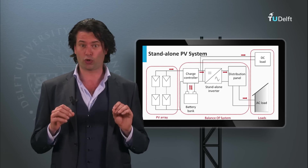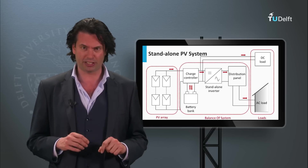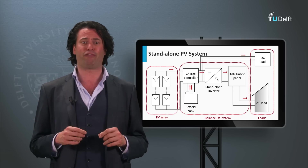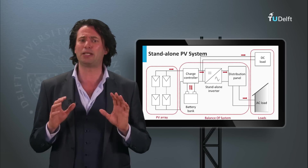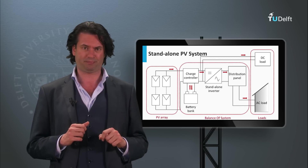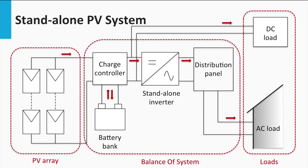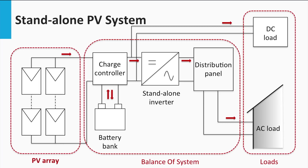The stand-alone PV system is also called the off-grid PV system, simply because it functions independent of the electric grid. As discussed before, the stand-alone PV system has these important components. The PV array is an interconnection of modules that supplies the required photo-generated power to the system.